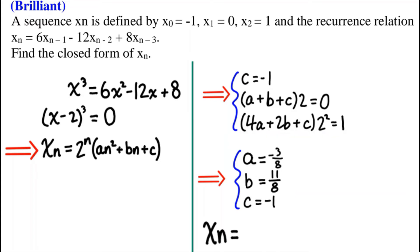Now, by solving these equations, we get that a equals negative 3 divided by 8, b equals 11 divided by 8, and c equals negative 1 because, well, we already kind of figured that one out already.